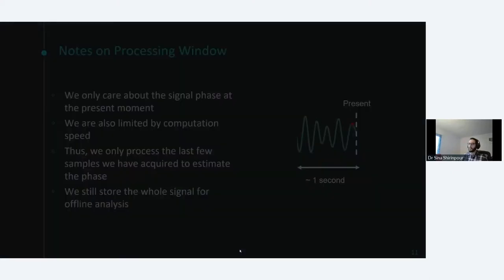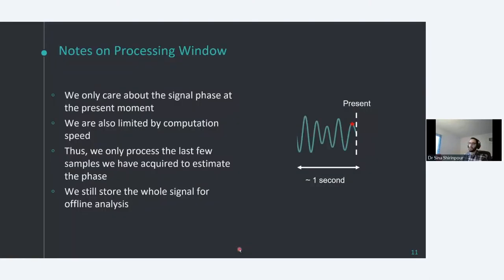Throughout this presentation, when we talk about processing signals in real-time, we talk about processing a window of data — for example, one second or half a second of data up to the present moment. The reason we take a short window is because we only care about the phase at the current time, and because the longer window you take, the more processing time it takes.